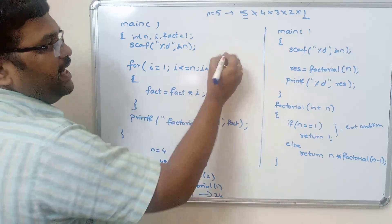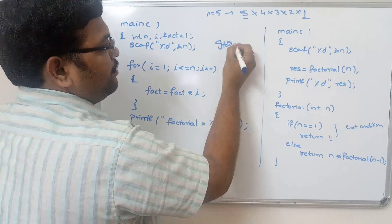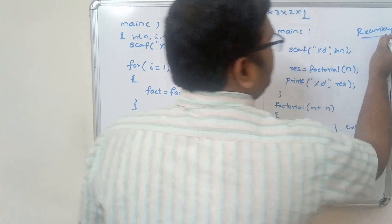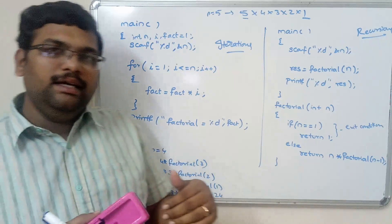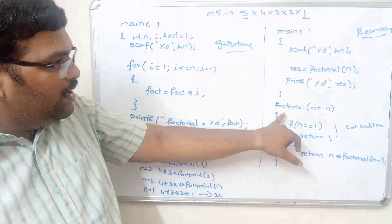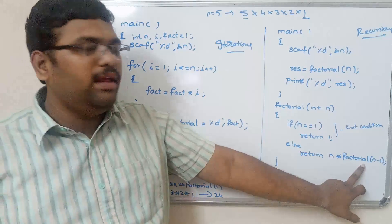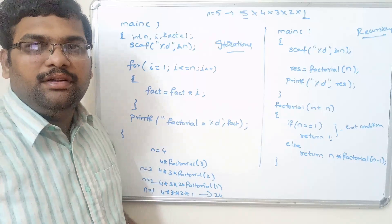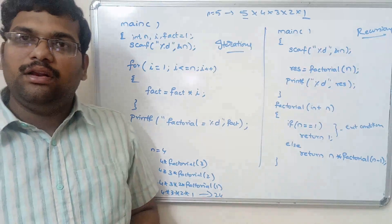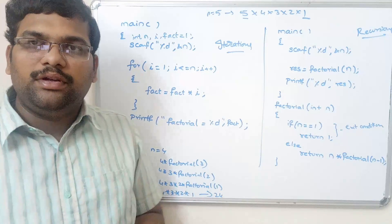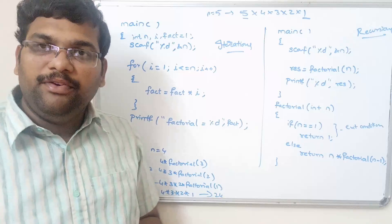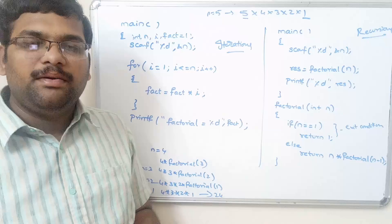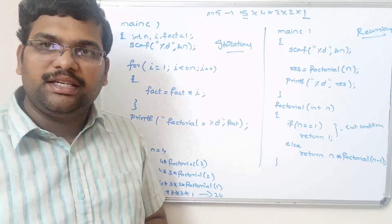So this is the iterative approach, and this is the recursive approach. Calling the same function itself — here in the factorial function, we are again calling the same function, that's why this logic is called a recursion function. If you really understood, like and share my videos with your friends and don't forget to subscribe to my channel. Thank you very much.